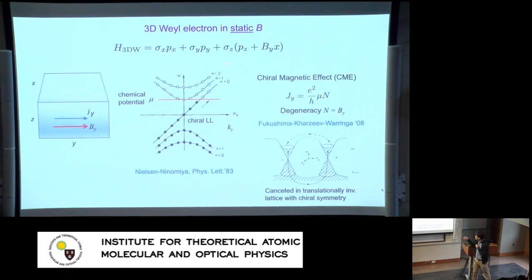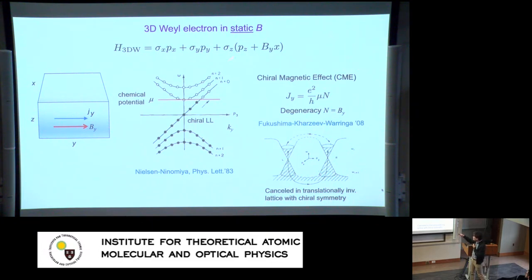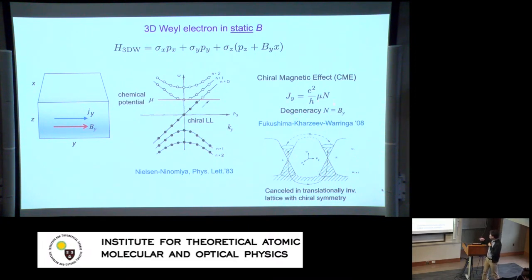If I do the same for a Dirac electron in a magnetic field, I get a very strange dispersion where ky is the direction of my momentum. I get this chiral zeroth Landau level — already without any electric field, I have a chiral Landau level, and if I occupy the electrons I get a current. This is known as the chiral magnetic effect. But in usual lattice systems with chiral symmetry, this effect is forbidden because you typically have at least two Weyl points which cancel the effect.